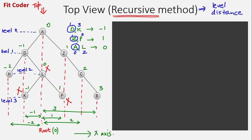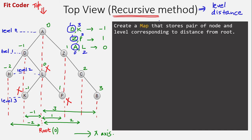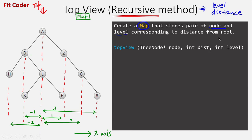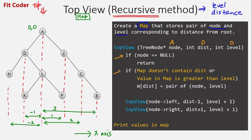So to find out the top view we'll make use of level and distance. In the first step we create a map that stores a pair of node and level corresponding to distance from the root. We have a function top view which takes three parameters: a node of the tree, a variable distance, and a variable level. The first call will be for the root node with distance 0 and level 0. We come inside, check if node is null, then check if the map contains key for 0. Since the map is initially empty, we create a new mapping: key 0 maps to node a with level 0.